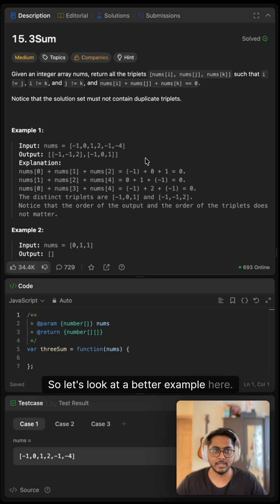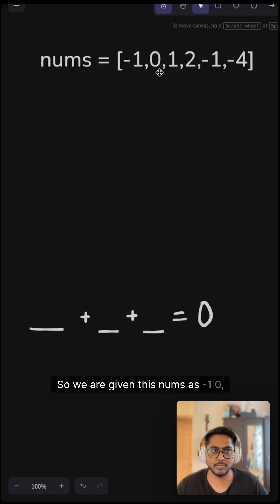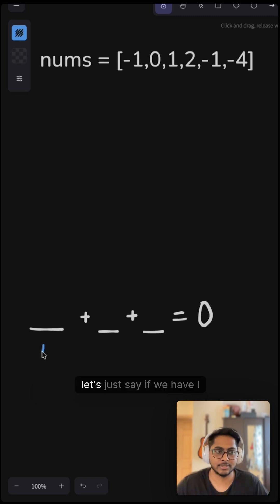Let's look at a better example here. We are given this nums as minus 1, 0, 1, 2, minus 1, minus 4. So this should happen in such a way that if we have i, j, k, three pointers here, and if we start our i here, our j could be this, this, this, this. It could not be this because we need one more element. So all of this should sum to zero.